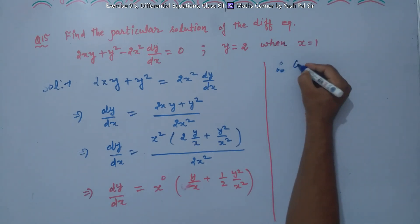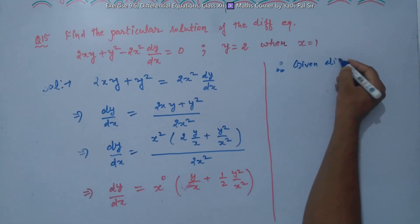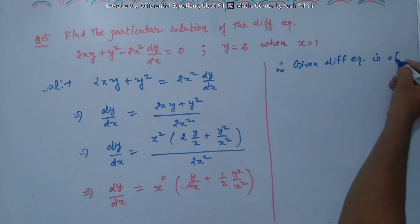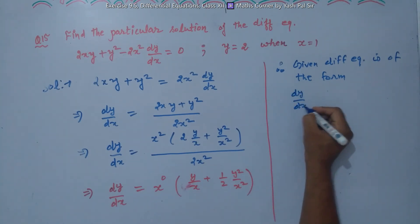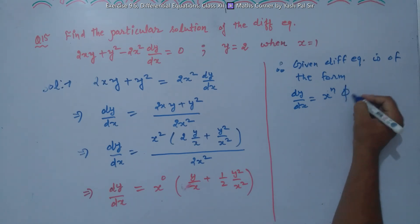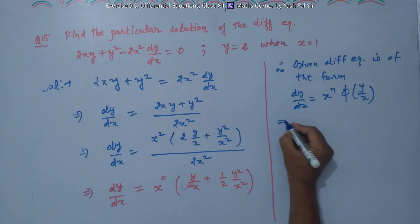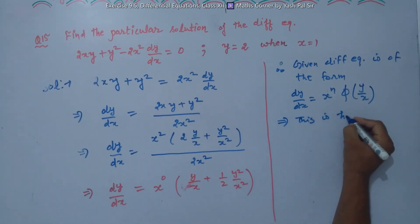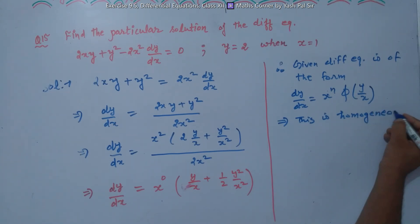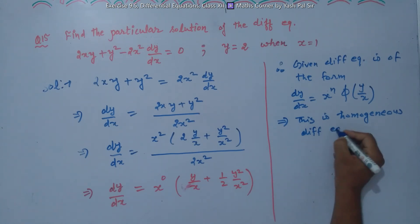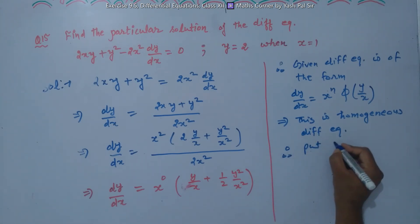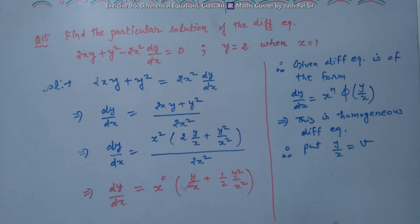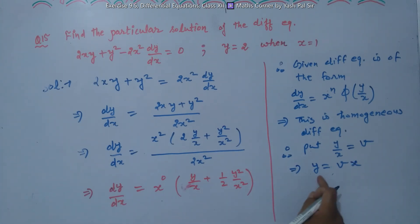Taking x squared common in the numerator, we get 2(y/x) plus y²/x². The denominator is 2x squared, so x squared cancels. This gives dy/dx equals x raised to power 0 times (2(y/x) + (1/2)(y/x)²). Therefore, the given differential equation is of the form dy/dx equals x^n times phi(y/x), confirming it is a homogeneous differential equation.